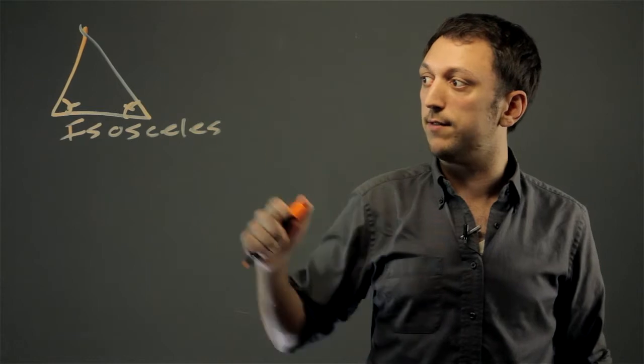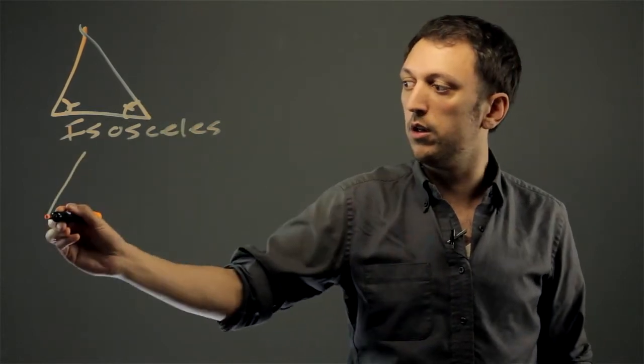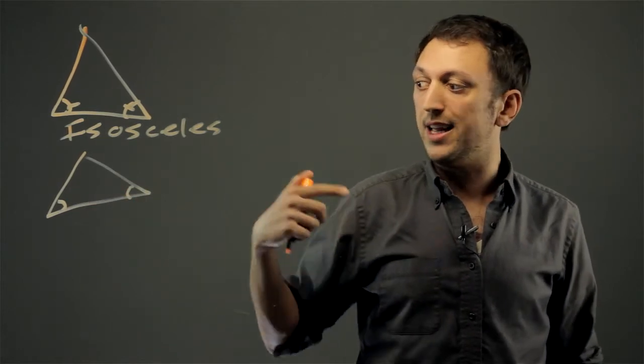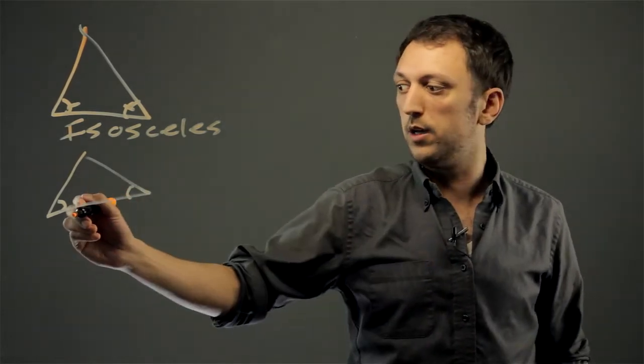You could also make the conjecture that if these two angles were not equal, for example, here, these don't look very equal, then it is not isosceles. It's scalene.